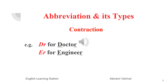The third type of abbreviation is contraction. Contraction is nothing but the abbreviated form of the word that is formed by taking the first and the last letter of the word. For example, DR for doctor and ER for engineer.